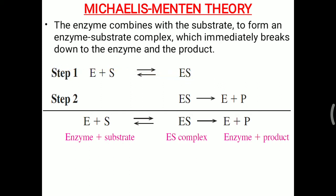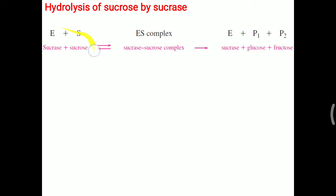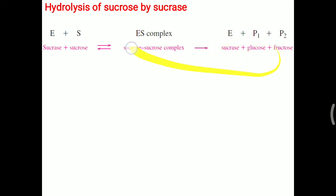To remember: step 1 is reversible, step 2 is irreversible, as per Michaelis-Menten theory. This is illustrated by the hydrolysis of sucrose by the sucrase enzyme. Sucrose is a disaccharide made up of glucose plus fructose. Sucrase and sucrose combine to form the ES complex; sucrose can re-separate from the enzyme, but once sucrase converts sucrose into glucose and fructose, the enzyme cannot reconvert glucose and fructose back into sucrose. So it is irreversible.